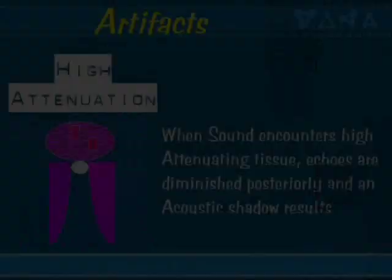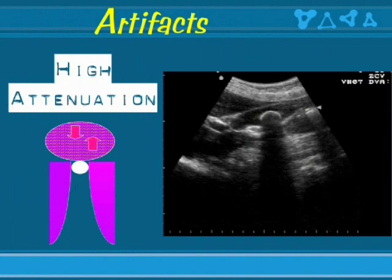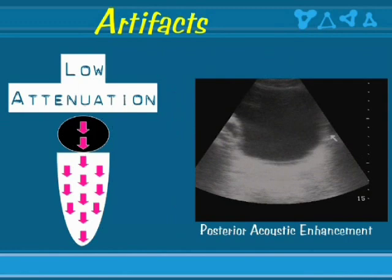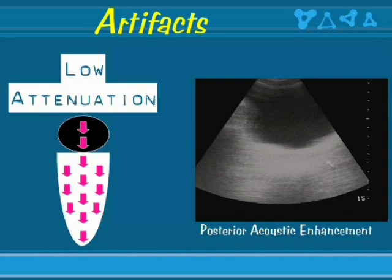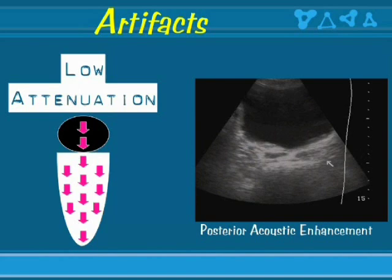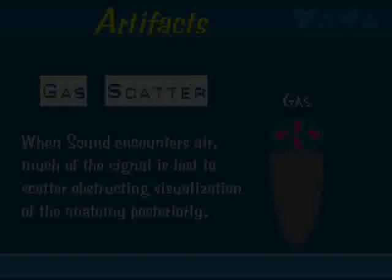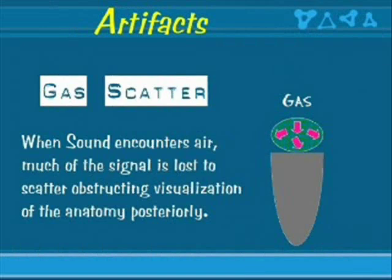Artifacts encountered during ultrasound include high attenuation — as seen with a gallstone, which has high attenuation with posterior shadowing. Low attenuation occurs when something transmits sound very well, creating posterior acoustic enhancement, as seen with a urinary bladder where posterior structures are very bright. By adjusting the TGC, we reduce the posterior acoustic enhancement and can see those posterior structures much better. Gas scatter occurs whenever ultrasound encounters air, such as within the bowel or the lung, and very little is seen when gas is encountered.